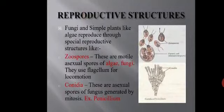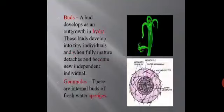Conidia is generally used as a reproductive structure in Penicillium, which reproduces with the help of these structures. Buds are also a reproductive structure — a bud basically develops as an outgrowth in hydra, develops into a tiny individual, and when fully mature, detaches and becomes a new independent individual. In the case of sponges, the reproductive structure which helps in reproduction is gemmules. Gemmules are basically the internal buds of sponges.